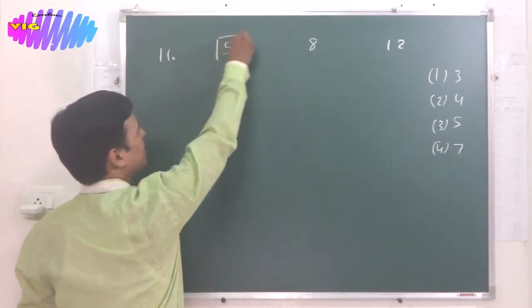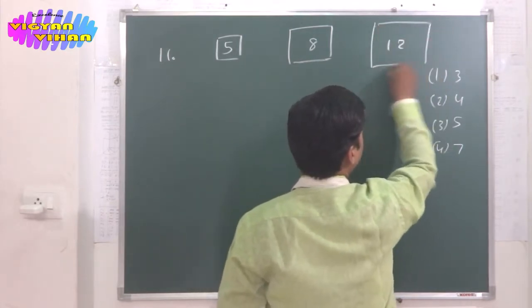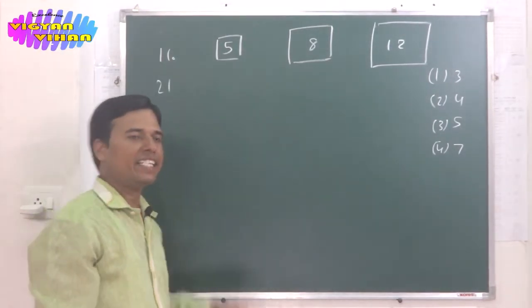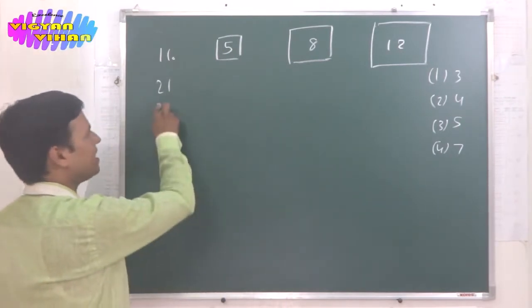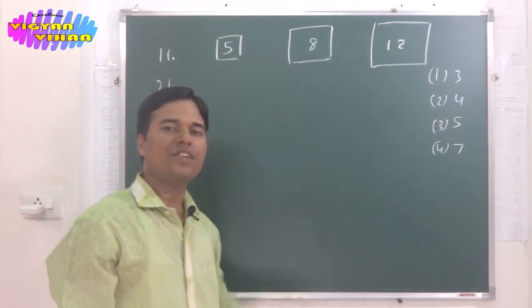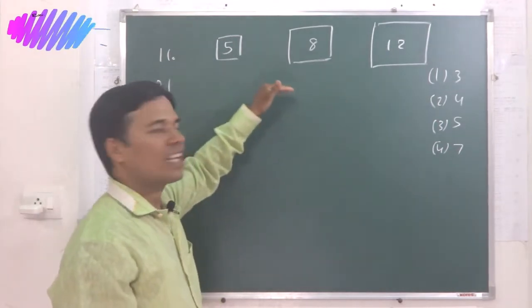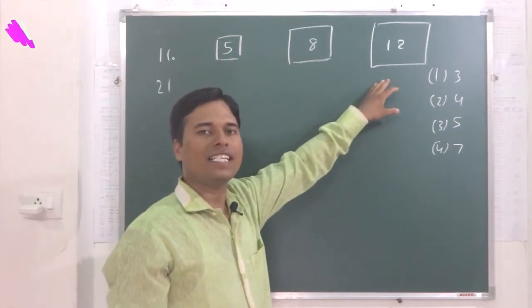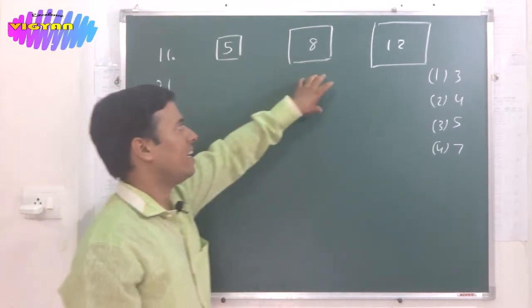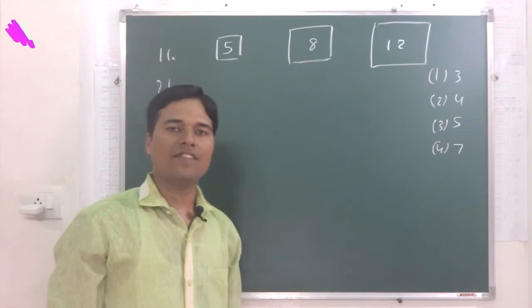There are only 3 containers: 5 liter, 8 liter, and 12 liters. We have 21 liters of water and we will have to divide it into 3 equal parts — that means 7 liter, 7 liter, and 7 liter. We must confirm that none of these 3 containers has a scale to measure smaller quantities; we can only measure 5 liters, 8 liters, and 12 liters. So there is no container that can directly measure 7 liters.